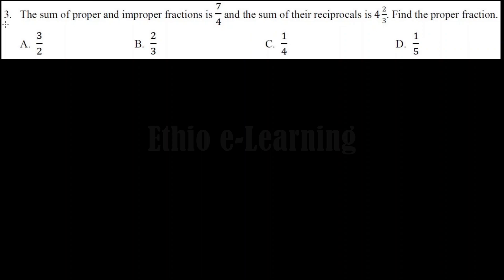The sum of proper and improper fractions is 7 over 4, and the sum of the reciprocals is 4 and 2 thirds. Find the proper fraction.